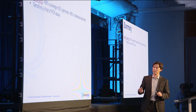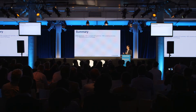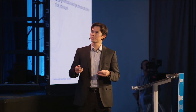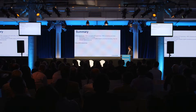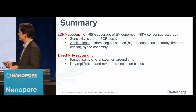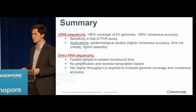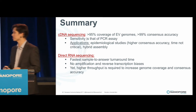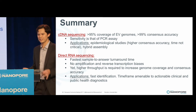In summary, cDNA sequencing works great — more than 95% coverage of the genomes, very high consensus accuracy, and sensitivity equal to that of the PCR assay. If it's amplifiable, it's sequenceable. Applications include epidemiology where time is not critical, and you can also think about hybrid assembly with MiSeq or Illumina-based approaches, or Sanger sequencing. Direct RNA sequencing offers the fastest sample-to-answer turnaround time, with no amplification and no reverse transcription bias. The issue is throughput — you need more reads to pile up for better consensus accuracy. The typical application at this stage will be identification, within a timeframe amenable to actionable clinical and public health diagnosis.